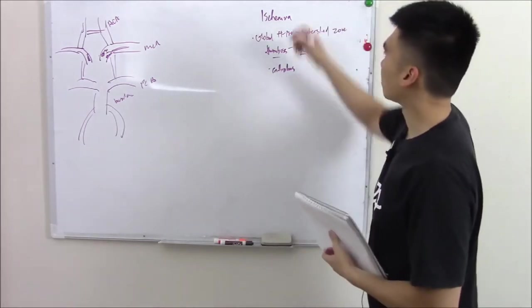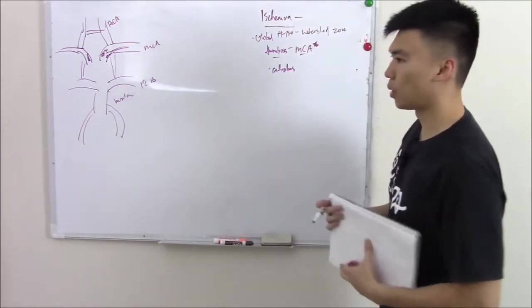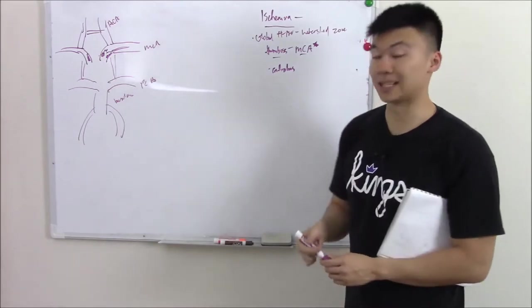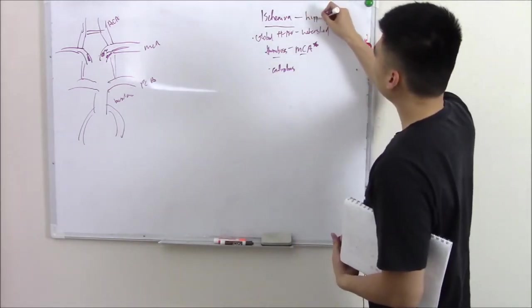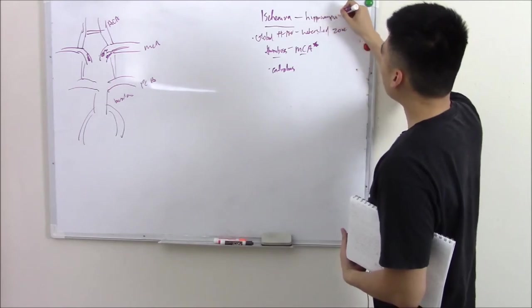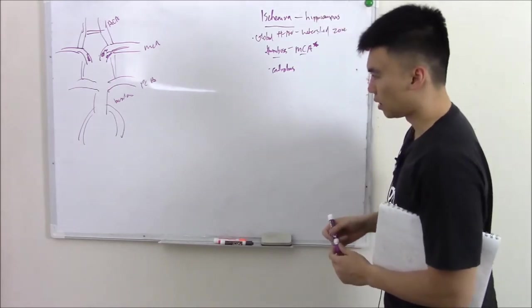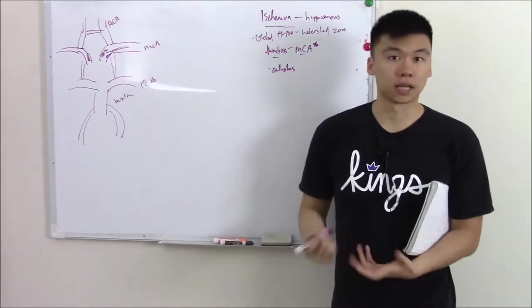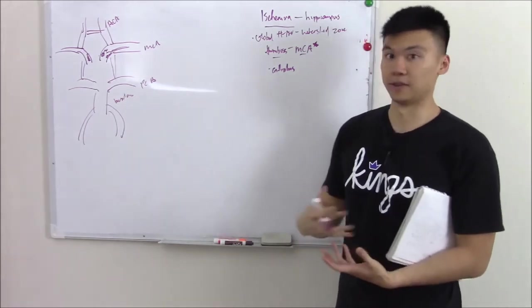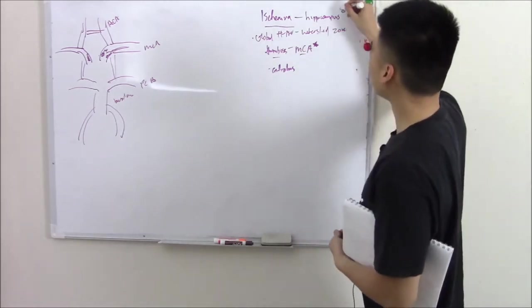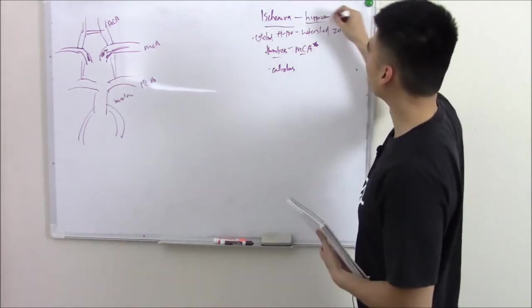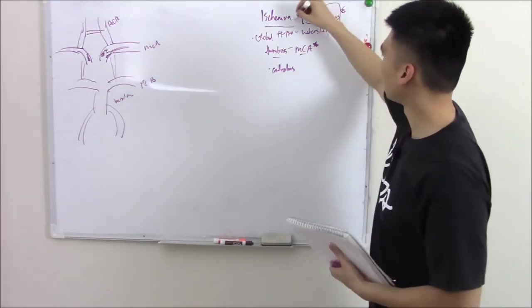So all of this can cause ischemia. They might ask you what area of the brain is more susceptible to ischemia. Maybe your hippocampus. Why is that? I'm not quite sure. There just seems to be a higher ATP use in your hippocampus for whatever reason. Maybe it's very, very important. But just know hippocampus is a big one. I've gotten a few questions on that. So this is the most susceptible area for ischemia.